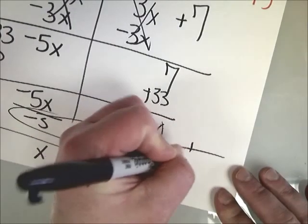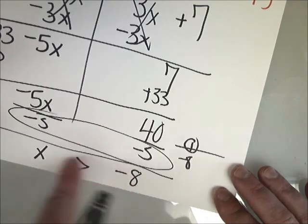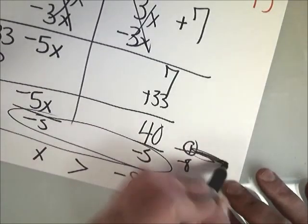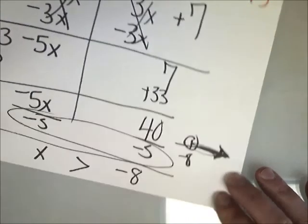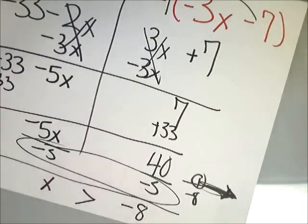So anyway, graph time, negative 8. Make a circle. There's no line, so it's unfilled. And x is greater than, so x goes up. And that is it. That is solving inequalities with multiple steps, variables on both sides.